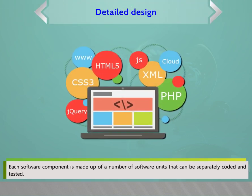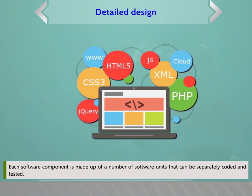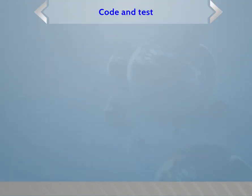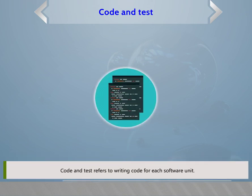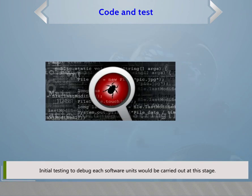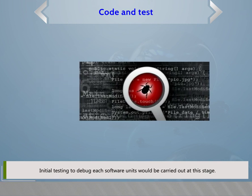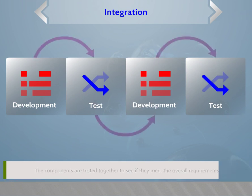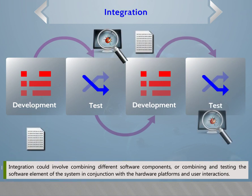In detailed design, each software component is made up of a number of software units that can be separately coded and tested; the detail design of these units is carried out separately. Code and test refers to writing code for each software unit; initial testing to debug each software unit is carried out at this stage. Integration involves testing the components together to see if they meet the overall requirements, which could involve combining software components or combining and testing the software elements with hardware platforms and user interactions.